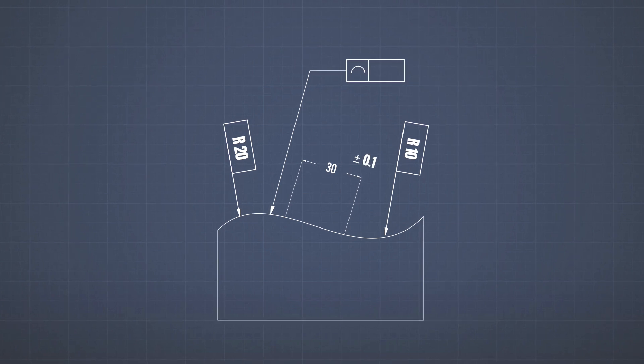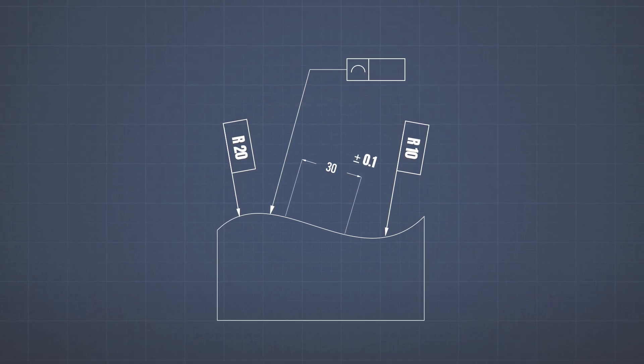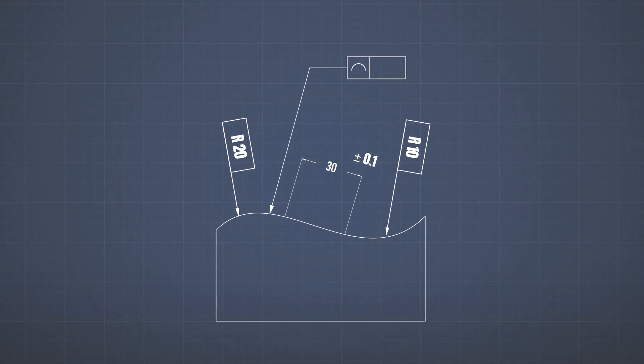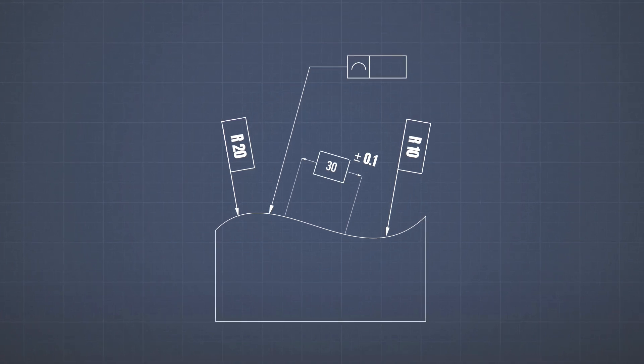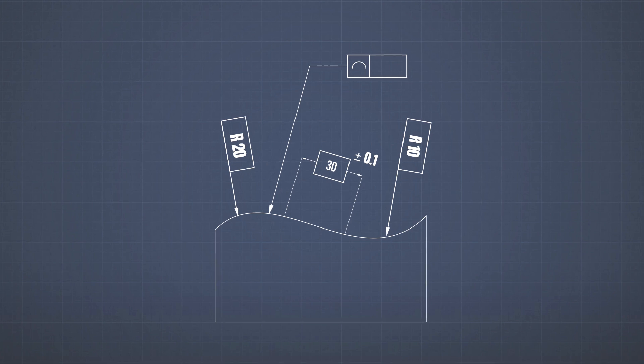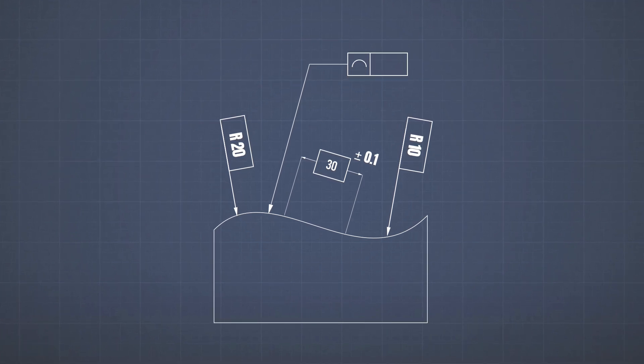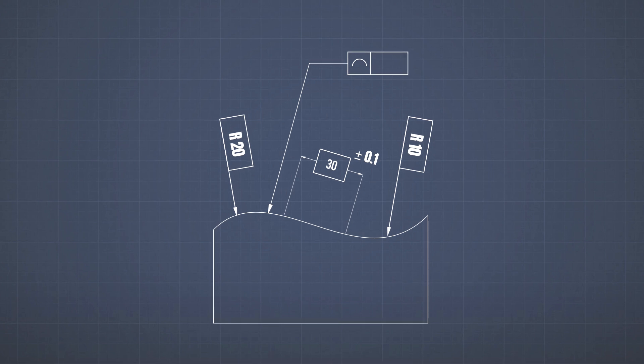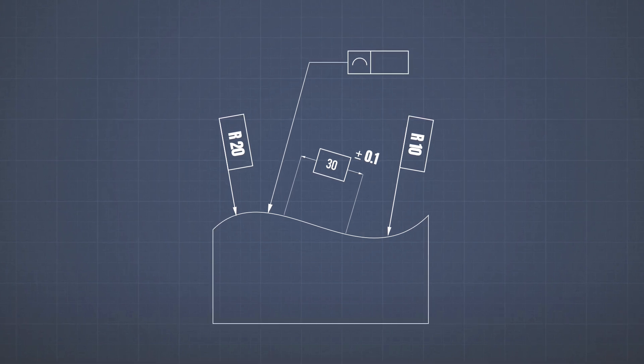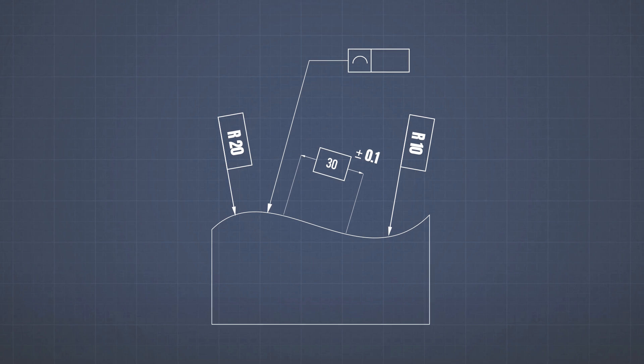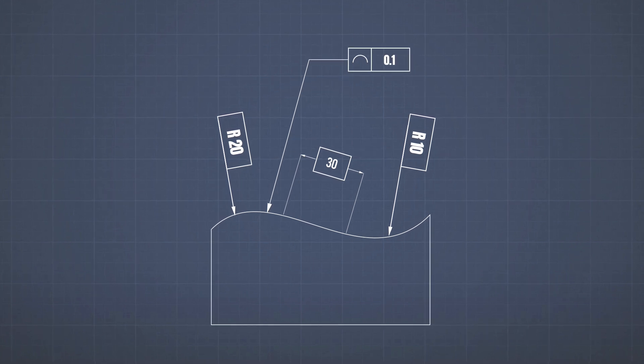Or for example, plus minus 0.1. If you do not add the box, it means you're dimensioning the real feature. But by adding the box, it means you are dimensioning a theoretically ideal shape of the feature. So the first step is that you describe your perfect profile using these basic dimensions. And then you add the tolerance using the feature control frame, the 0.1 in this case, for example.